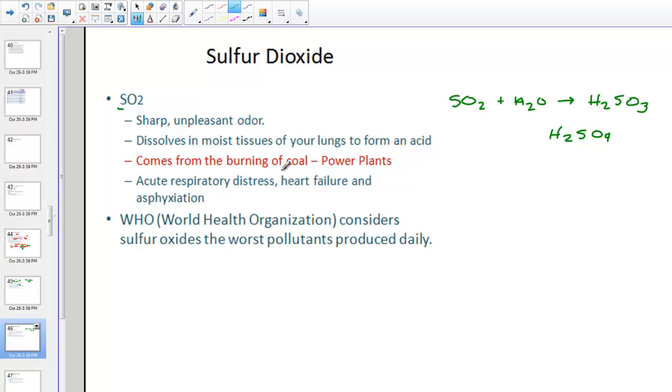The most common source is burning coal. So you'll start to see a cloud of nitrous oxides and sulfur dioxide near power plants where they're burning coal. You have acute respiratory distress, heart failure, and asphyxiation at extreme conditions. So the WHO, the World Health Organization, actually considers sulfur oxides to be the worst pollutants we produce daily. And the number one source of this pollutant is coming from our coal burning power plants.